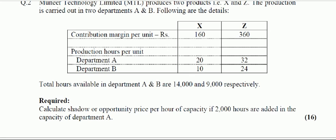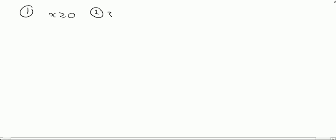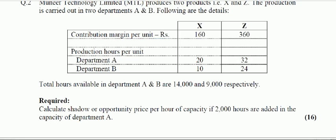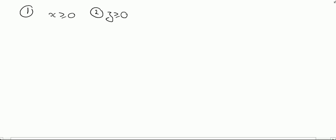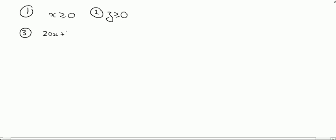Solving this question — the hours in Department A will increase by 2000. An increase of 2000 hours in Department A will change the corner points which we used in our previous videos to calculate the contribution maximization point. We will have a new set of constraints. The constraint from Department A will change — previously we had 14,000 hours in Department A, and now 2000 are added, so the constraint for Department A will now be 20x plus 32z.